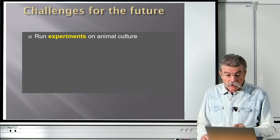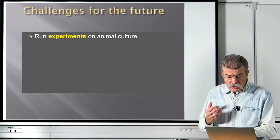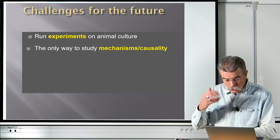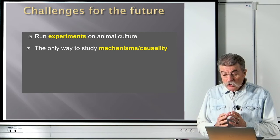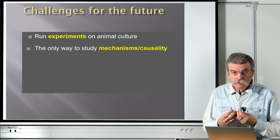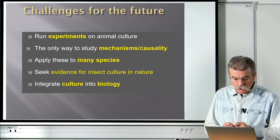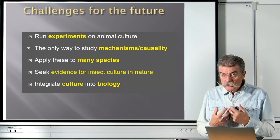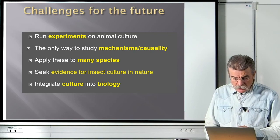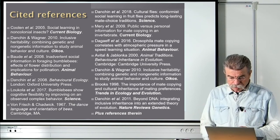Looking ahead, the challenges for the future of animal culture include performing experiments across as many species as possible — the only way to study mechanisms and causality. In the case of insects, it is now really important to study whether cultural traditions and population-level behavioral differences actually emerge in nature, with the broader goal of integrating culture into biology in general.